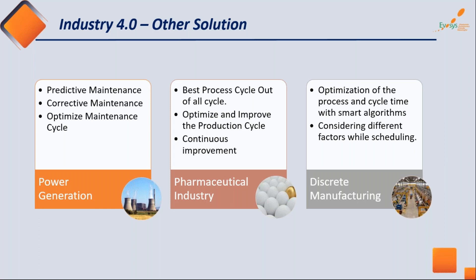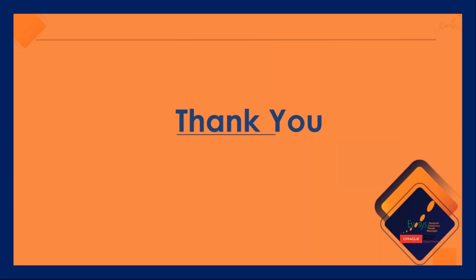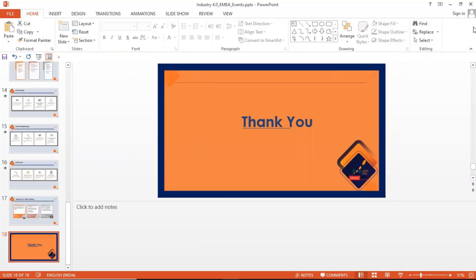We can optimize and improve the production cycle and enable continuous improvement in the pharmaceutical industry using these components. For discrete manufacturing, optimization of process and cycle times with smart algorithms can be done — considering different factors while scheduling, as we have seen in this presentation. These are the solutions achievable for Industry 4.0 using technology, and now I will transfer the screen to my colleague from Oracle.